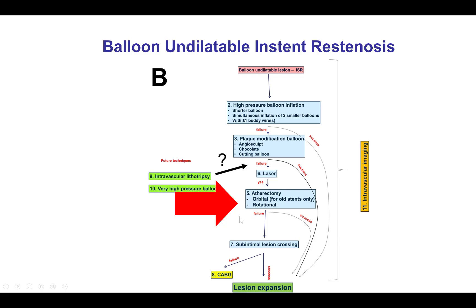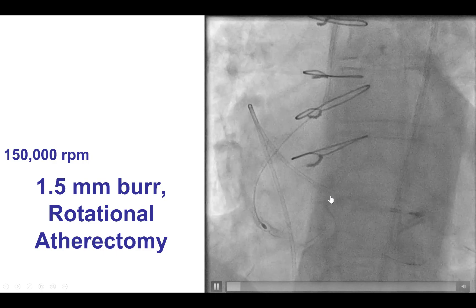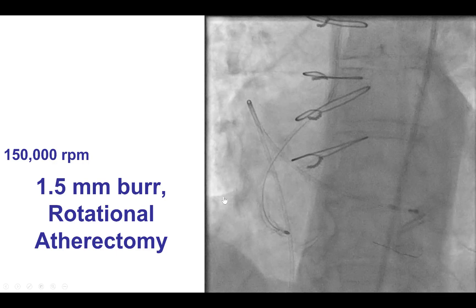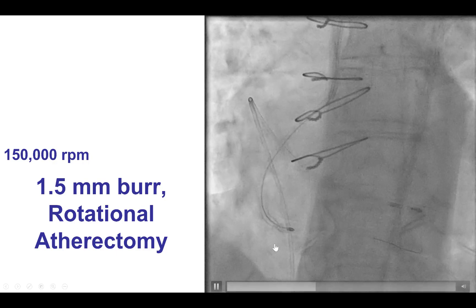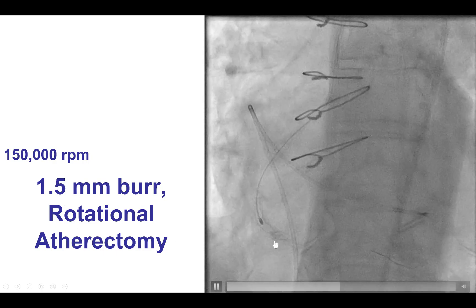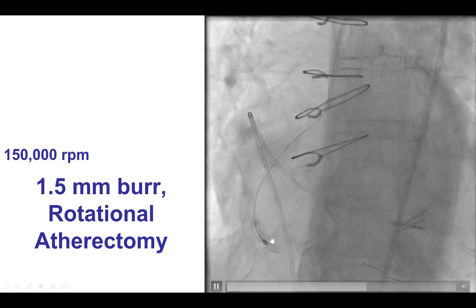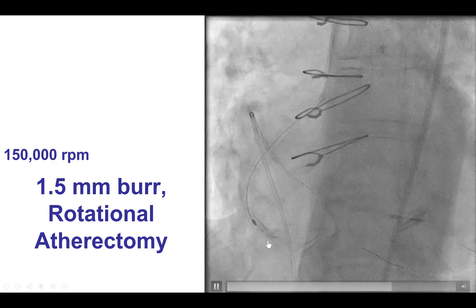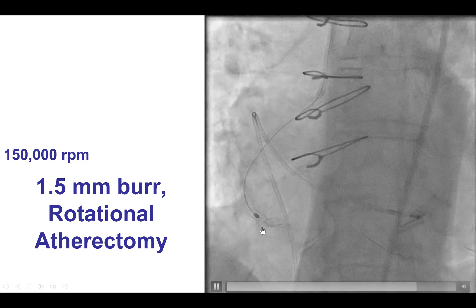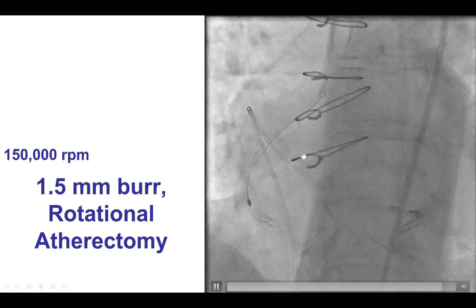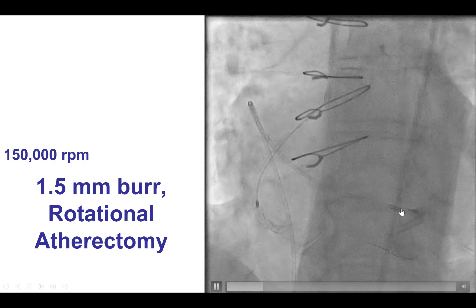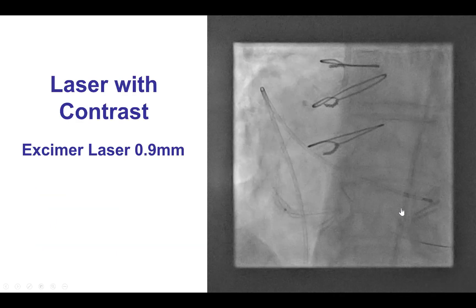So what to do next? Since balloons did not work, we decided to try atherectomy. This was done with a 1.5 mm burr — the burr was easily going through that area. We also used a temporary pacemaker for this.